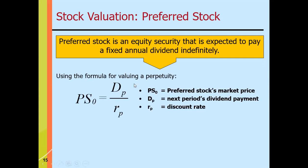What is the formula to determine the value of preferred stock? The formula is: the dividend of the next period divided by the discount rate. D sub P is the next period's dividend payment (the numerator), and R sub P is the discount rate (the denominator). The result is PS sub zero, which is the preferred stock's market price or value.